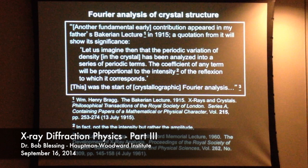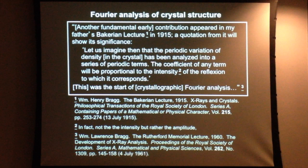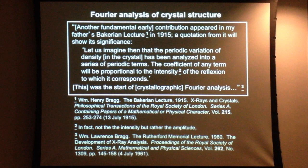After Lawrence Bragg's discovery of the notion that scattering can be regarded as specular reflection off lattice planes of crystals, he was, I think, 22 and a first-year graduate student when he made this discovery. It's really remarkable. William Lawrence Bragg is the youngest recipient of a Nobel Prize in any subject, and when the prize was awarded he had reached the grand old age of 25.